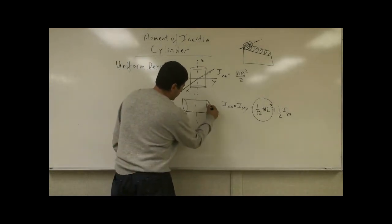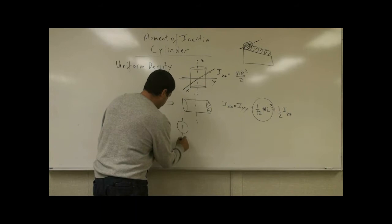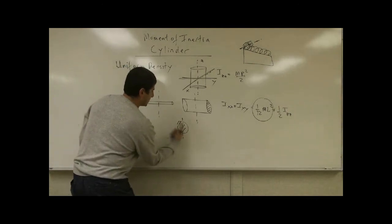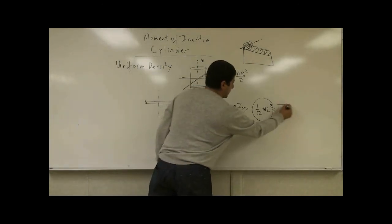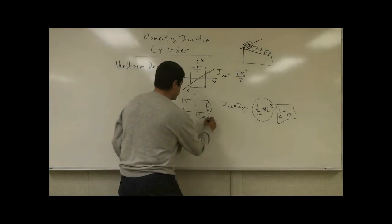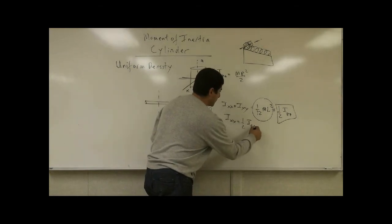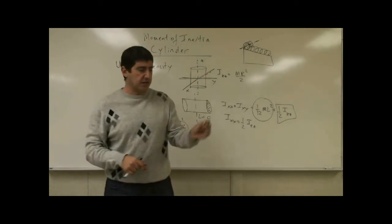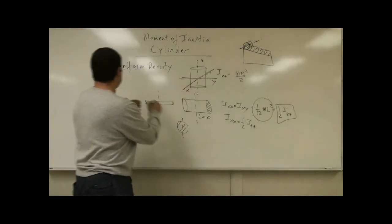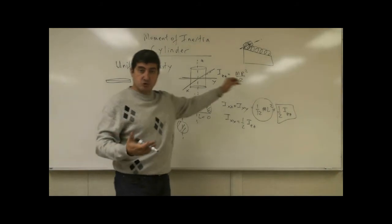On top of that, you have to visualize that the cross-sectional face of the cylinder is rotating about a sideways axis. If it rotates that way, its moment of inertia is going to be half of IZZ. So if the cylinder happens to have no length — length is zero — what would IXX be? It would just be half of IZZ. Take a coin as an example: a nickel is essentially a very thin cylinder where the length is very small.